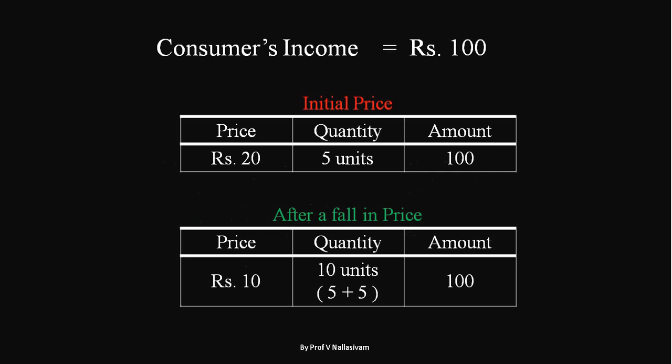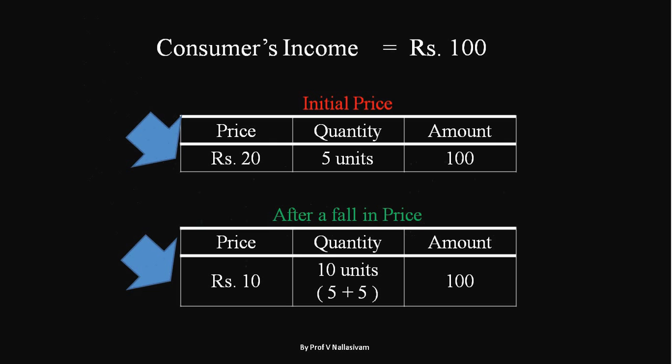The consumer's income is 100 rupees. Look at the initial price table: at 20 rupees price, the consumer buys 5 units of the commodity and spends 100 rupees. Now the price falls to 10 rupees — the consumer manages to buy 10 units with the same amount. It is enough if he spends 50 rupees to buy the same 5 units as before, but he has a surplus of 50 rupees, and with that 50 rupees he buys another 5 units of the same commodity.